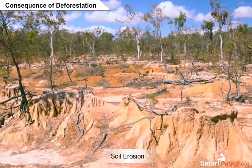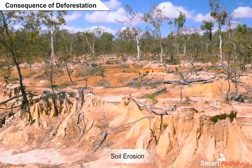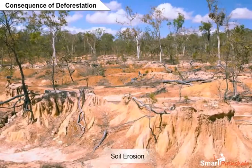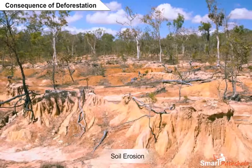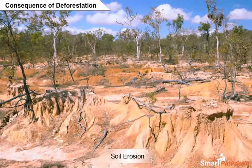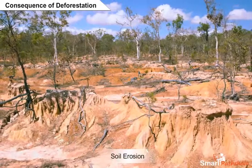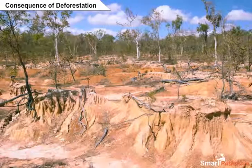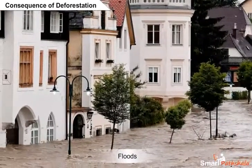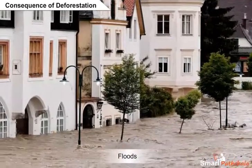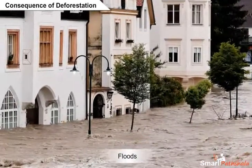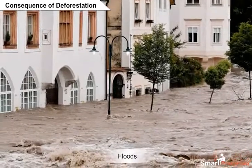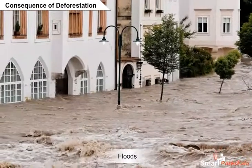Various properties of the soil like nutrient content, texture, etc. change because of deforestation. Deforestation also leads to a decrease in the water holding capacity of the soil, which results in floods.